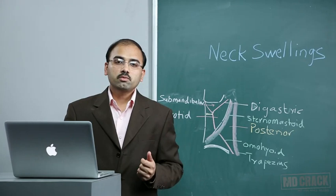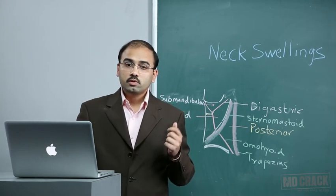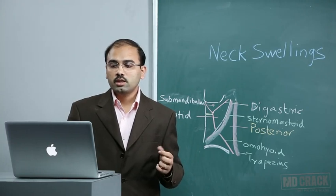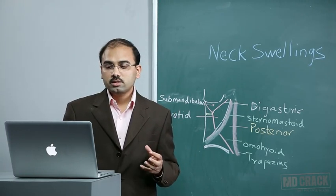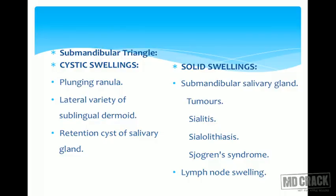Solid swellings in the submandibular triangle arise from the submandibular salivary gland — tumors, sialolithiasis, sialadenitis, and Sjögren's syndrome. These four conditions arise from the submandibular salivary gland. Various lymph nodes in the submandibular region may also give rise to solid swellings.